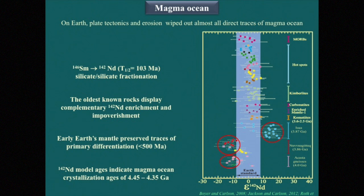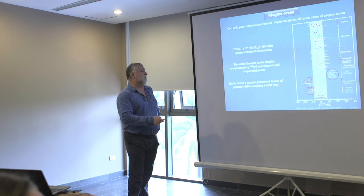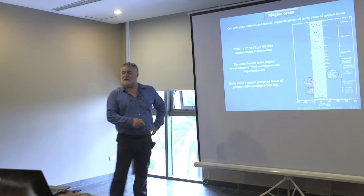They show that there is a complementary behavior with rocks depleted and rocks enriched in these isotopes, but this heterogeneity appears only in the oldest rocks, not in rocks younger than 3.8 billion years. Their conclusion is that the Earth's mantle preserves traces of the primary differentiation.